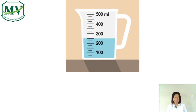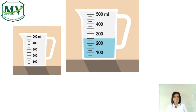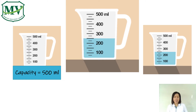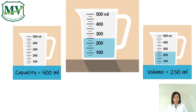Can you tell me the volume of water in the pitcher and the capacity of the pitcher? That's correct! This pitcher has a capacity of 500 ml — that is the amount of liquid the pitcher can hold. And the volume of liquid in the pitcher is 250 ml — that is the amount of liquid inside the pitcher. Good job, kids!